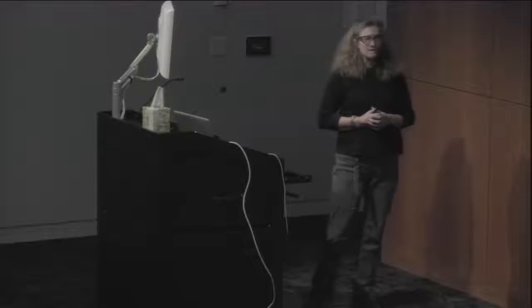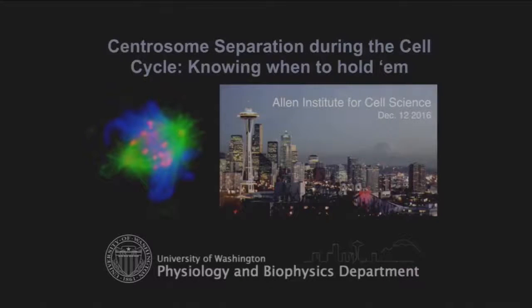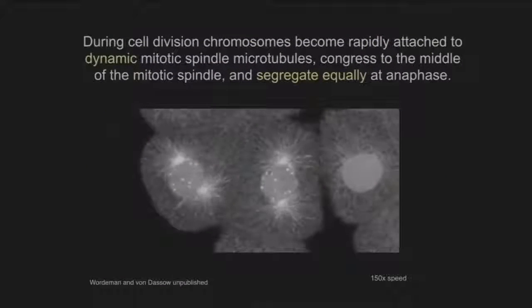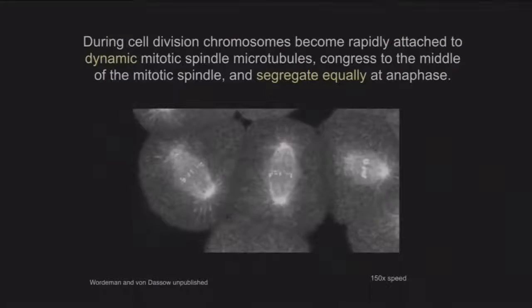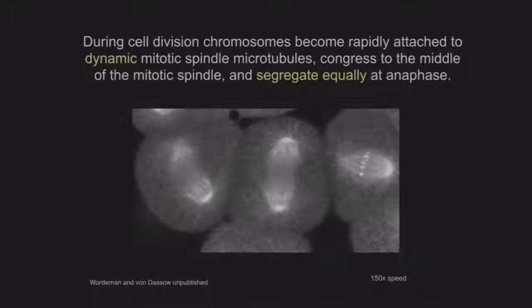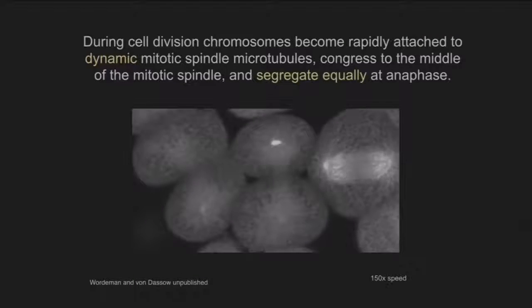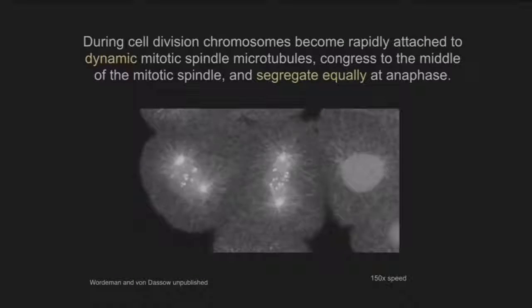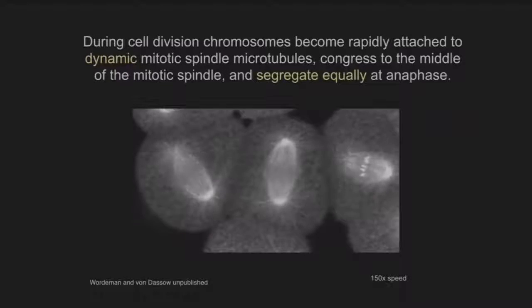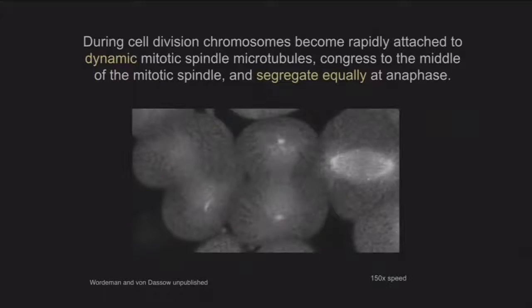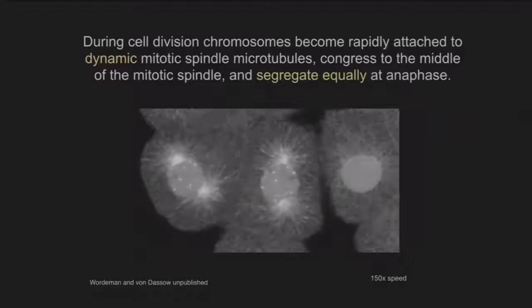I'm on the University of Washington main campus in the physiology and biophysics department. And despite the name of my department, I am a cell biologist from way back. In my lab, we are very much interested in how cells divide — all the mechanical aspects of this process: how the spindle forms, how the kinetochores of the chromosomes attach to the spindle, how they move on the spindle, how they line up, and how they segregate with perfect fidelity during cell division.